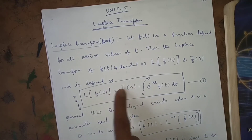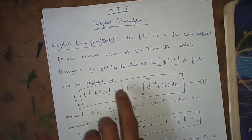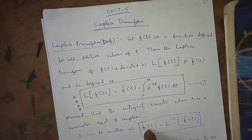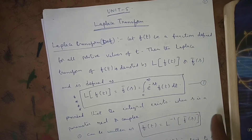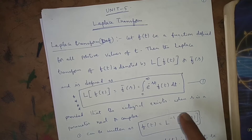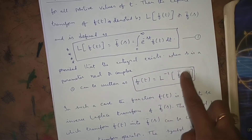If L{f(t)} = f̄(s), then sending L to the other side: f(t) = L⁻¹{f̄(s)}. In such cases, f(t) is called the inverse Laplace transform of f̄(s).